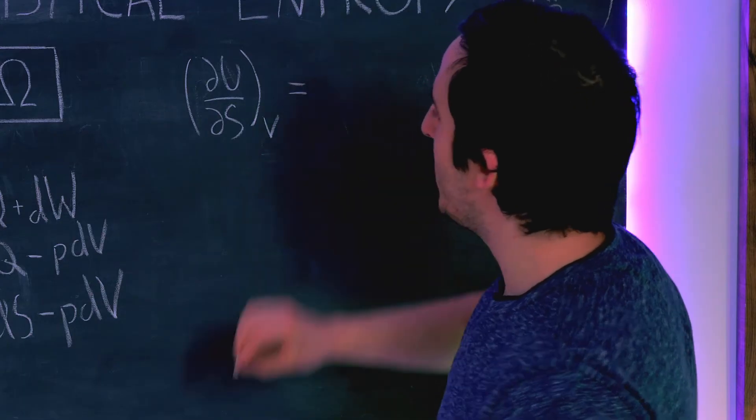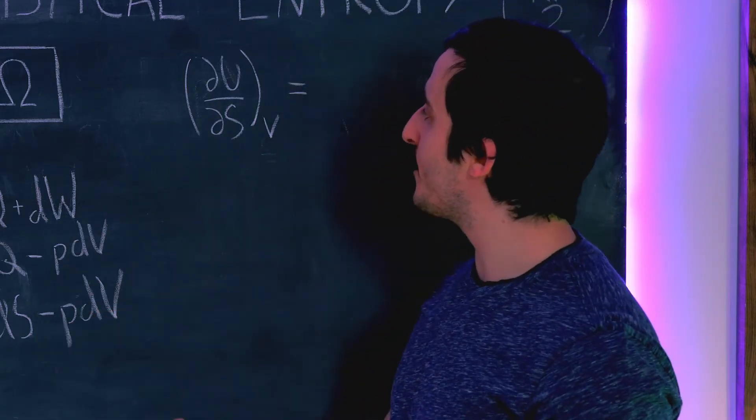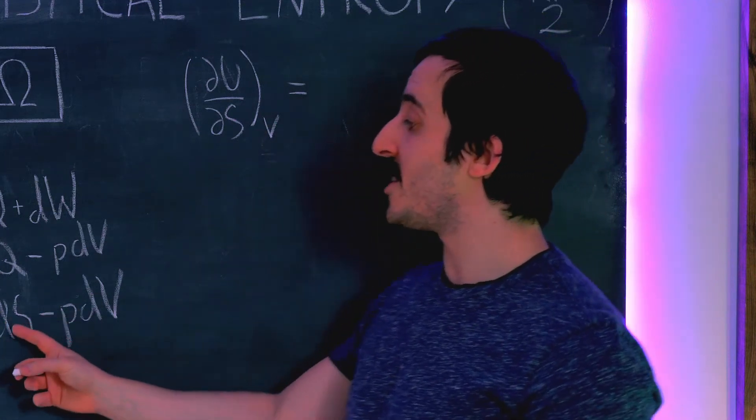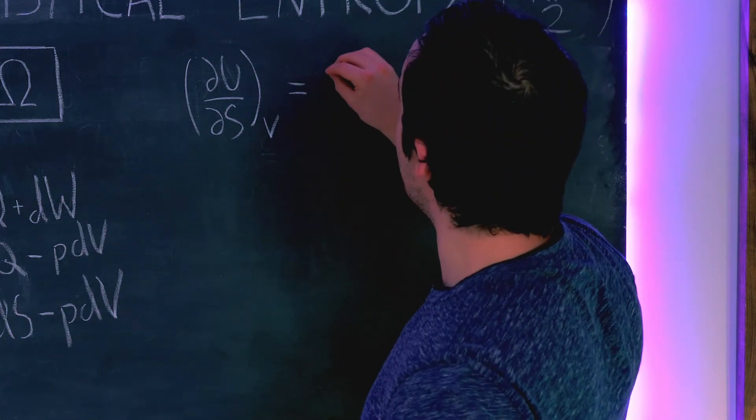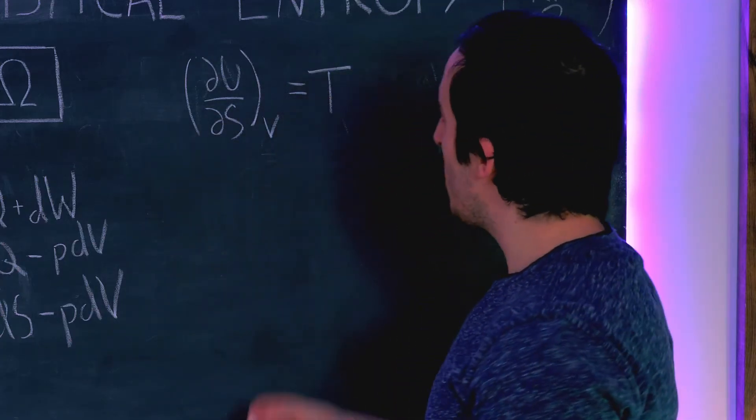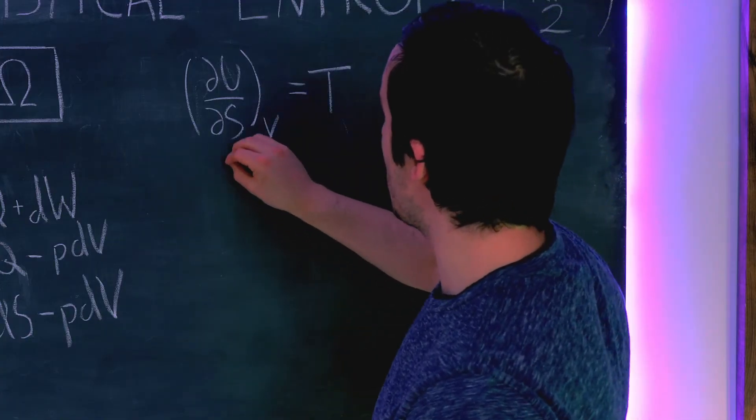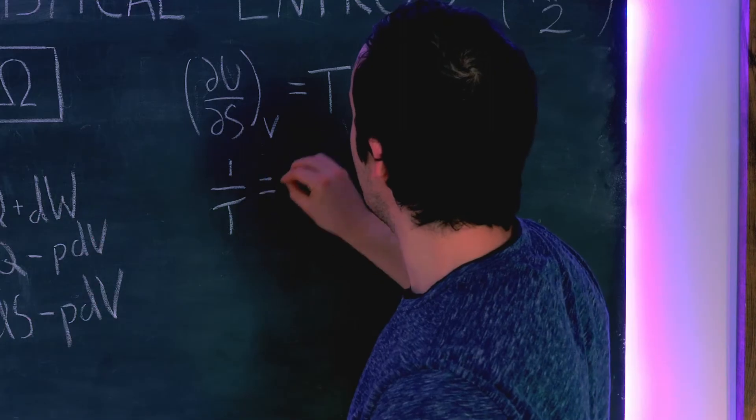And what does this equal? Well dV is equal to zero there's no change in volume so this term just goes and then we have T dS by dS well the dS is cancel so this is just equal to temperature. Right so now what we can do is invert each side of this so we have 1 over T is equal to dS by dU at constant V.